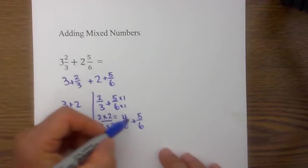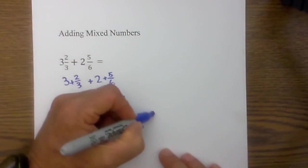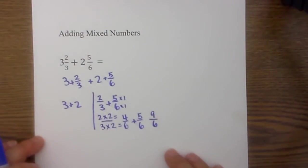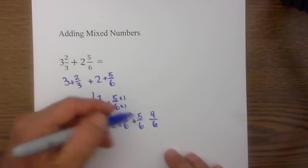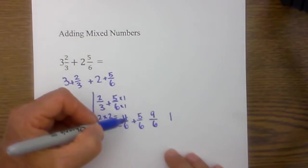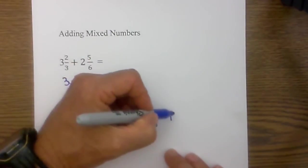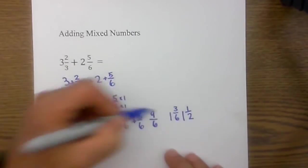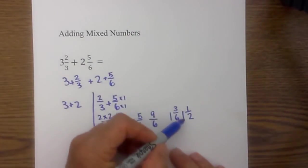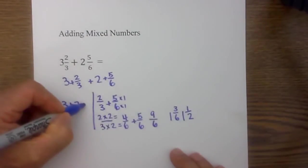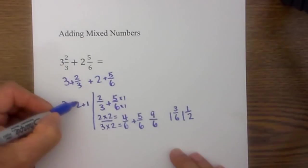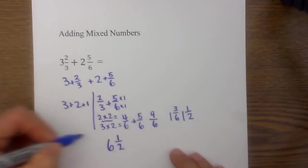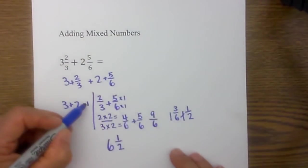Now we just add straight across: four plus five is nine-sixths. We have an improper fraction, so I need to convert it to a mixed number. Six goes into nine one time, and nine minus six equals three, so that's one and three-sixths, which simplifies to one and a half. Then I move this one to the whole numbers side.